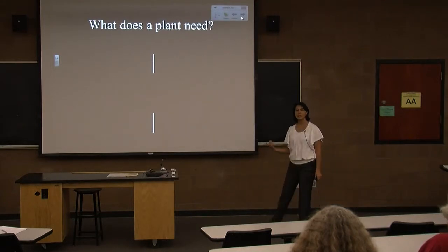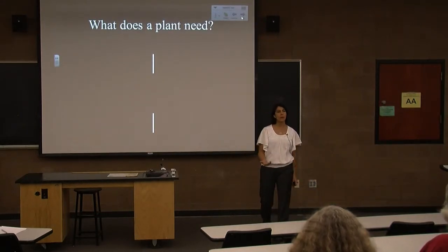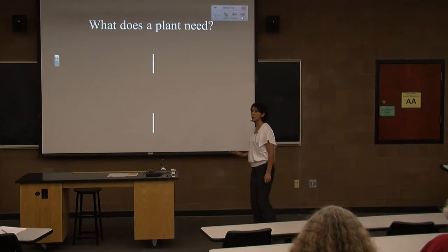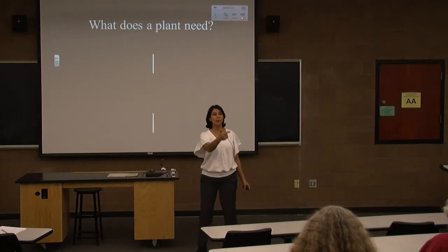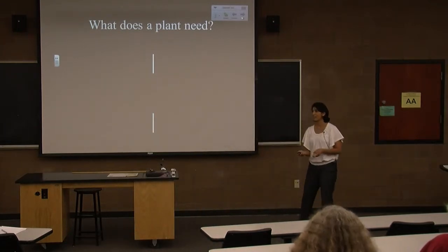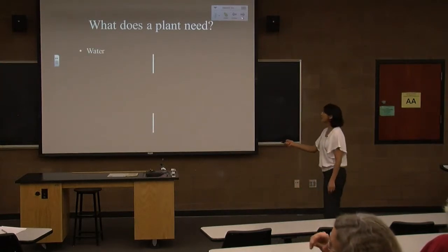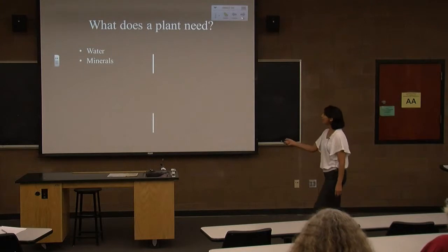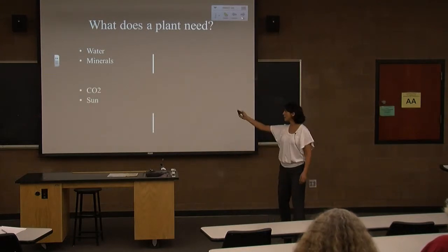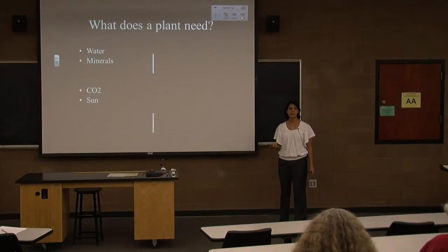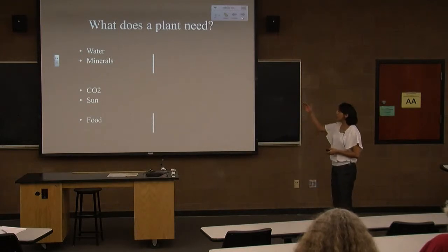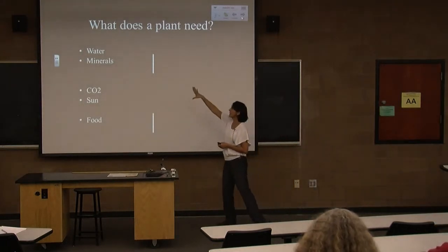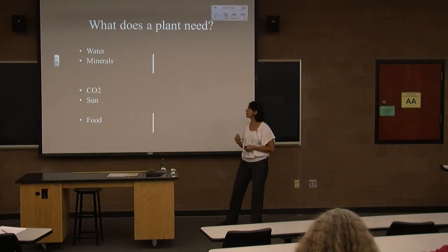Another way to classify parasites is based on what they steal from their host. First, what does a plant need? It needs water and minerals, carbon dioxide, and sunlight. Carbon dioxide and sun are used for photosynthesis, where the plant makes its food. The food is transported throughout the plant in a different system from where water and minerals are transported.